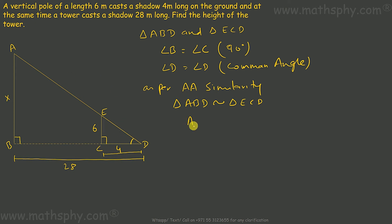In that case, AB over EC would be equal to BD over CD. AB I need to find out. EC is 6, BD is 28, and CD is 4.